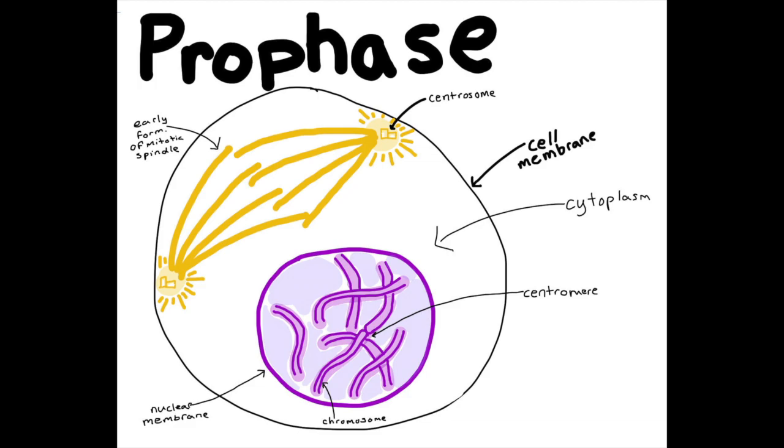With two identical sister chromatids, the formation of the spindle begins to form as spindle fibers either join another spindle fiber or connect to the centromere of a chromosome.